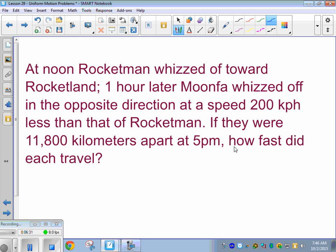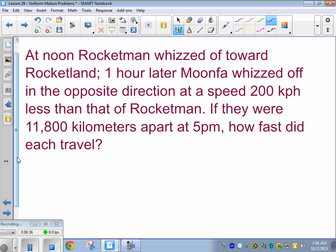All right, do you guys want to do another one? Should we try this one? Maybe we should set it up, just to make sure. All right. At noon, Rocketman whizzed off towards Rocketland. And one hour later, Moonpha whizzed off in the opposite direction at a speed of 200 kilometers per hour less than that of Rocketman. If they were 11,800 kilometers apart at 5 p.m., how fast do you travel? So if you were drawing a picture, they are going away from each other. All right? Opposite direction there. So our total distance this time is going to be 11,800 kilometers. That's how far apart they were at the end at 5 p.m.